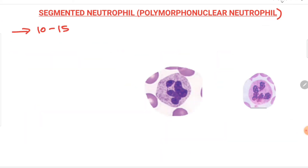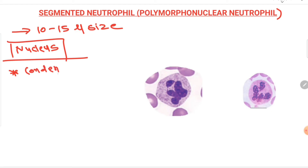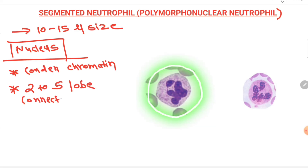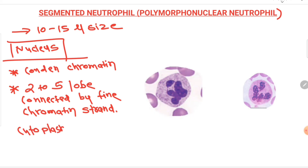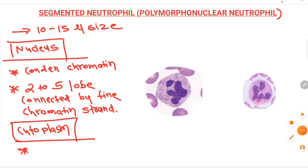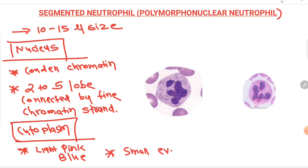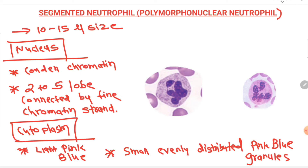The segmented neutrophil, also known as the polymorphonuclear neutrophil, is the most mature cell, measuring 10 to 15 microns. The nucleus is very condensed with two to five lobes connected by thin chromatin strands — this is why it is called a polymorph or polymorphonuclear neutrophil. The cytoplasm is light pink-blue with small, evenly distributed pink-blue granules, and you can see the two to five lobes clearly.